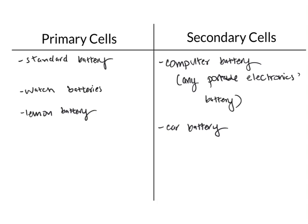Secondary cells, on the other hand, can be recharged. Some common examples of secondary cells are computer batteries, the batteries in any portable electronic device you might have, and your car battery.